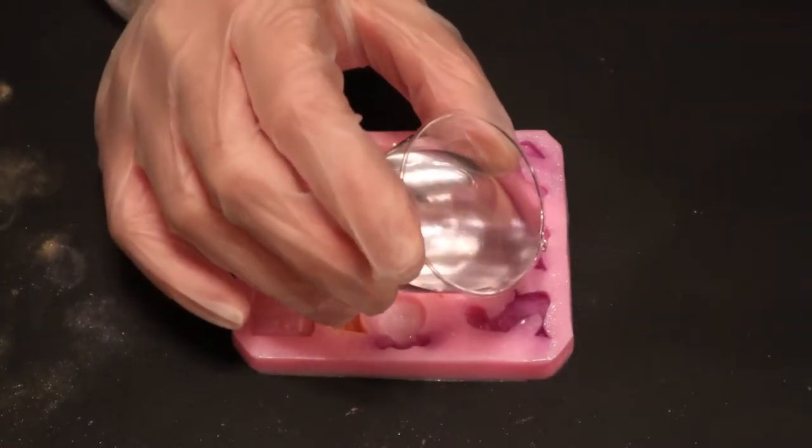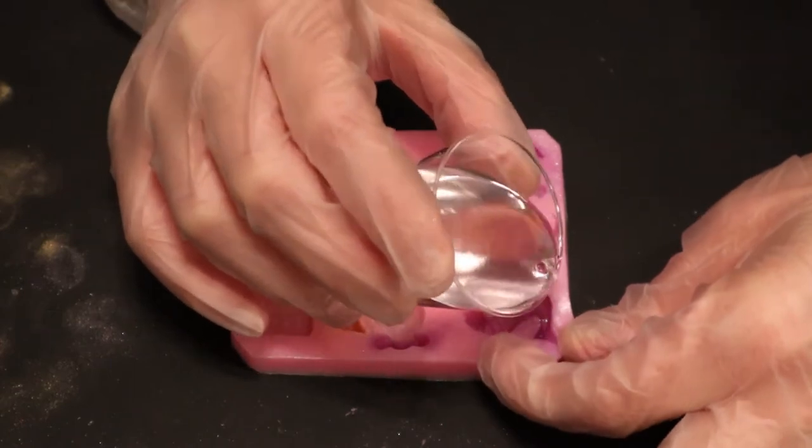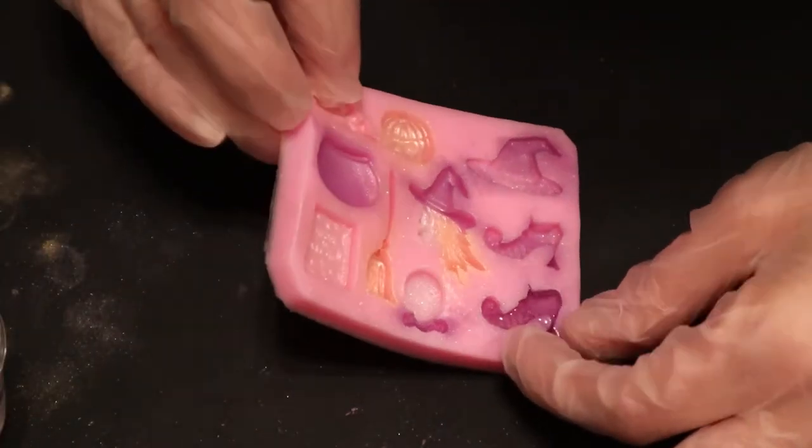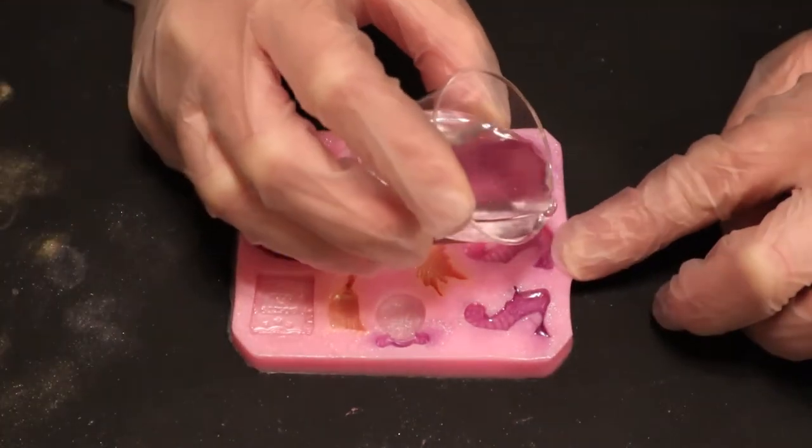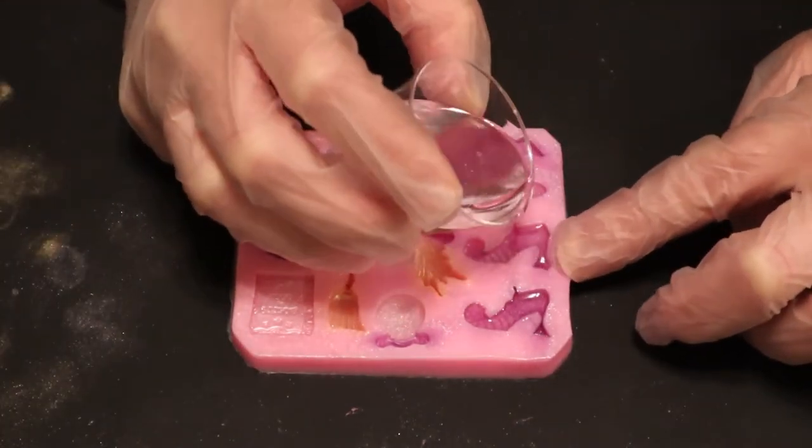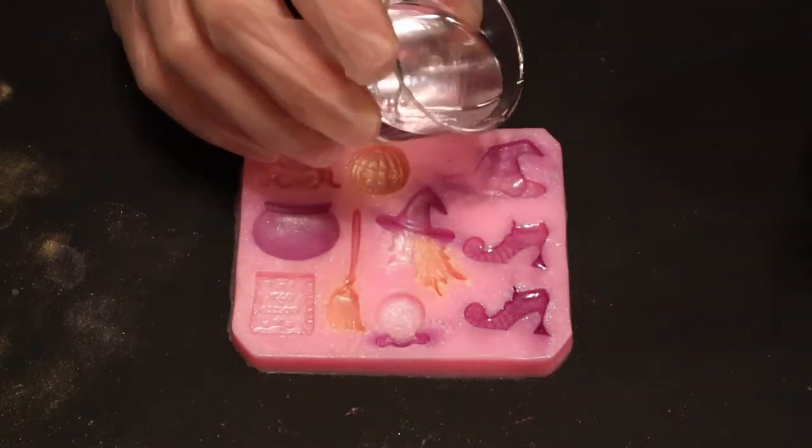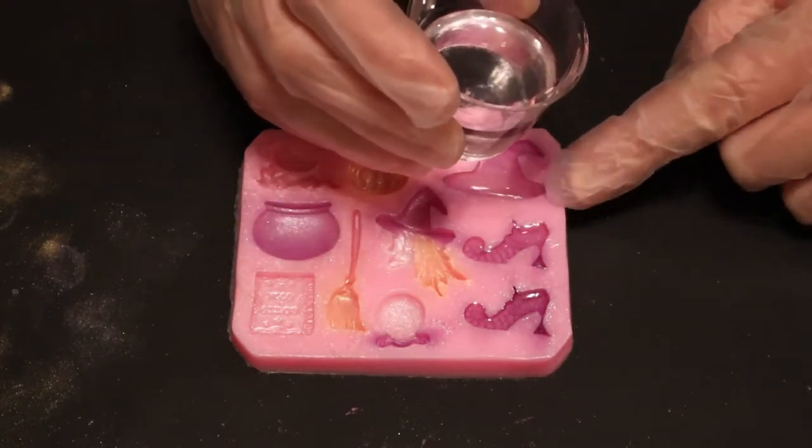Then it's time to pour the resin in. The bottoms of these witch's shoes were kind of hard to get resin into. Thankfully this mold is very pliable and bends easily, so I could adjust and get it into the little crevices.